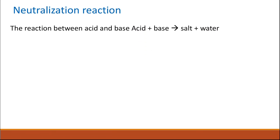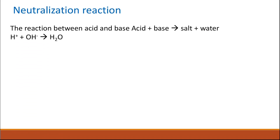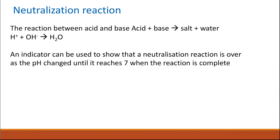Neutralization is the reaction between acids and bases to give salt and water. Hydrogen ions from the acid and hydroxide ions from the alkali combine to give water. An indicator can be used to show when the neutralization point is reached — when the reaction is complete, the pH changes and the indicator changes color. You can also use a pH meter to determine the pH of the solution.